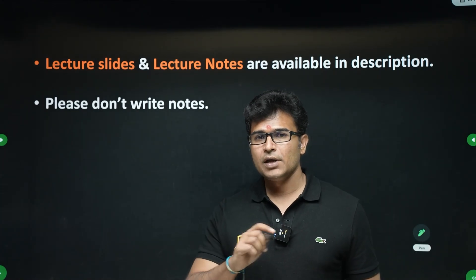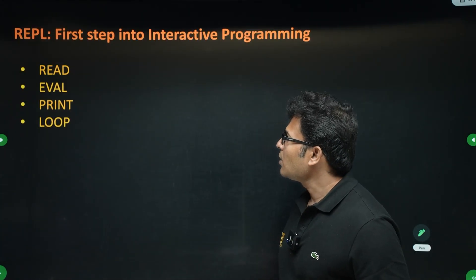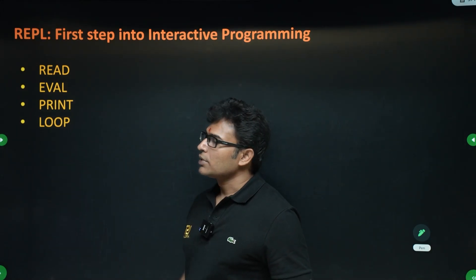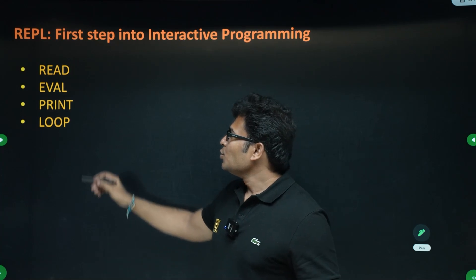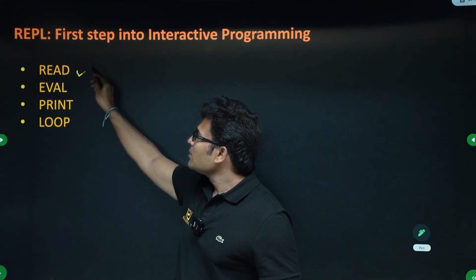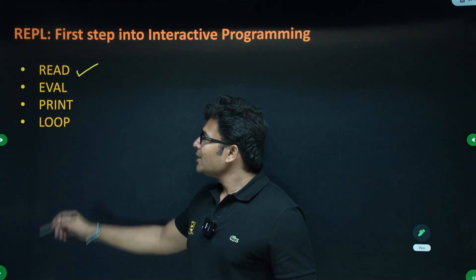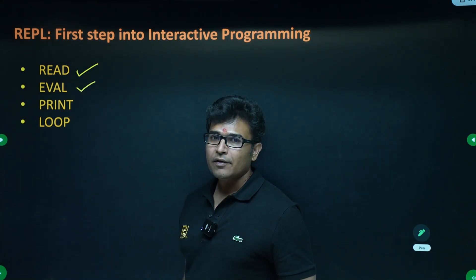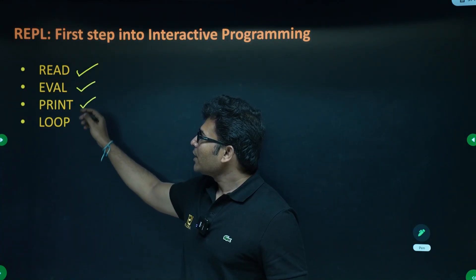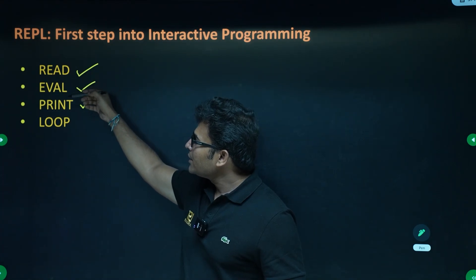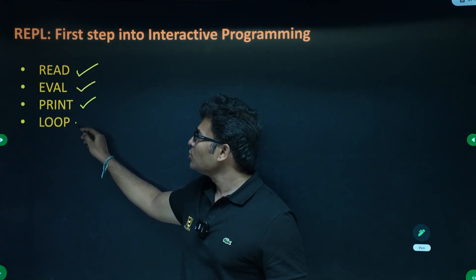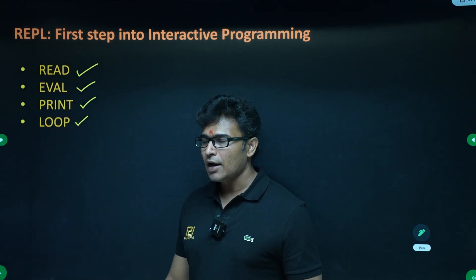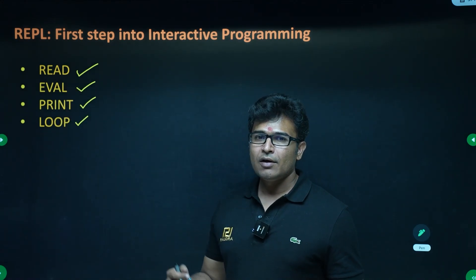REPL stands for Read, Evaluate, Print, Loop. You can give any input to Python; Python will read your input, then evaluate it, then print the result, and after reading, evaluating, and printing, it is again going to loop — meaning read, evaluate, print again.